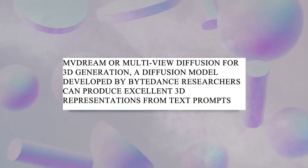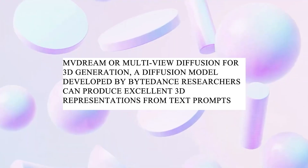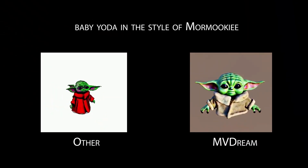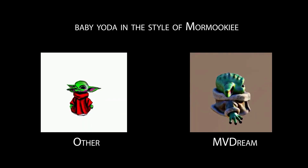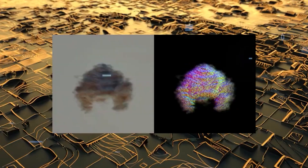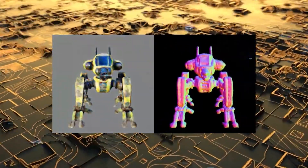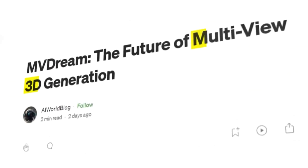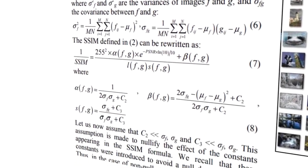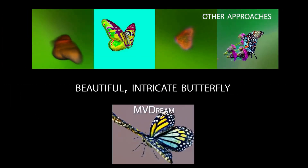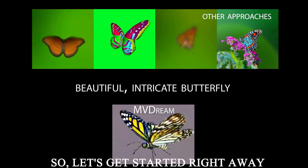MVDream, or MultiView Diffusion for 3D generation, is a diffusion model developed by ByteDance researchers that can produce excellent 3D representations from text prompts. Similar models already exist, but MVDream achieves comparably high quality and does away with two major drawbacks of competing strategies. These frequently experience content drift and the Janus dilemma — for instance, a generated plate of waffles alters the amount and arrangement of the waffles depending on viewing position, or a generated baby Yoda has numerous faces. MVDream appears capable of comprehending physics, creating very good 3D models from just one line of text.